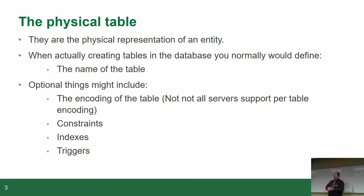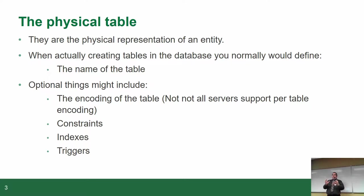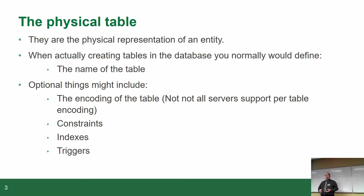The next one is the physical table. So far we've talked about entities — you roughly know what an entity is: it's a thing, an event, a person, a location, something you can describe using properties called attributes. Now when you translate this entity into a table, because once you make it into a physical database it's now a table, you need to know the name of the table. Everything has to have a name — it's a bit like how a class in Java must have a name.